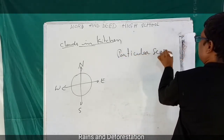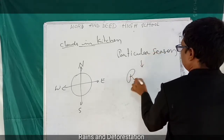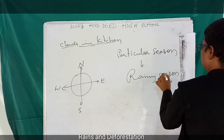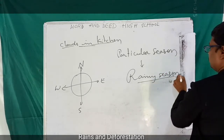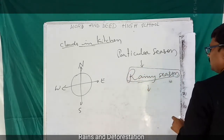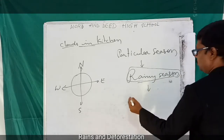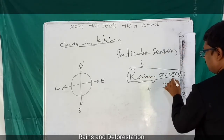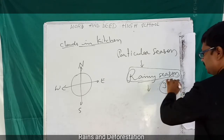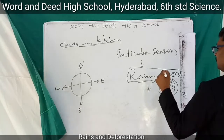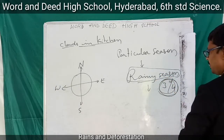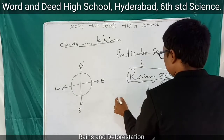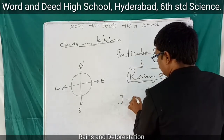Generally we get rains in a particular season. That season we call the rainy season. Especially in the rainy season, do we get rains on all days? No, right? And around three or four months of the season — do we get rains during all of those three or four months? No, right? We get rains only during some months.